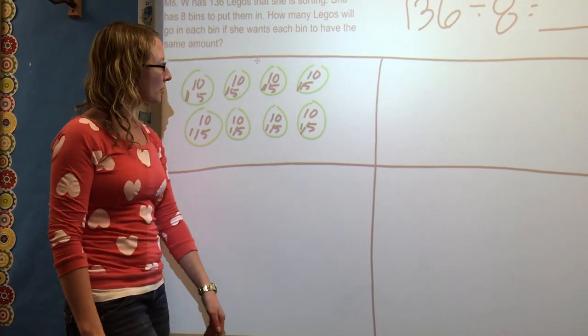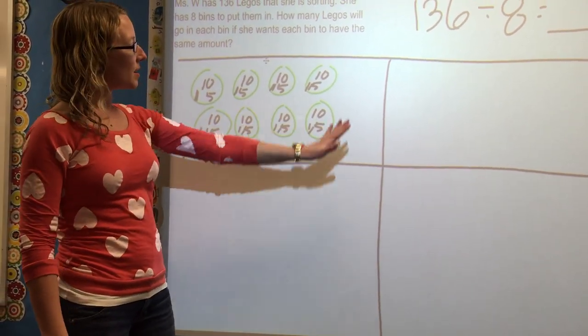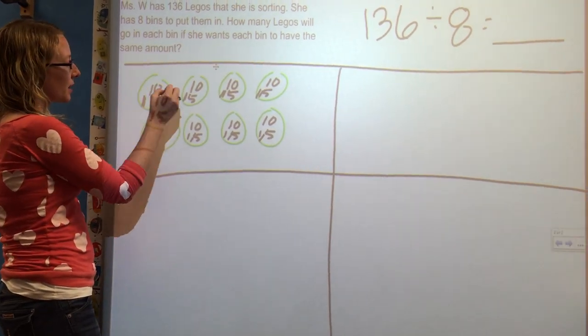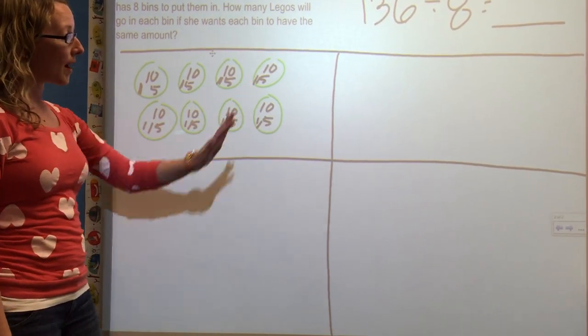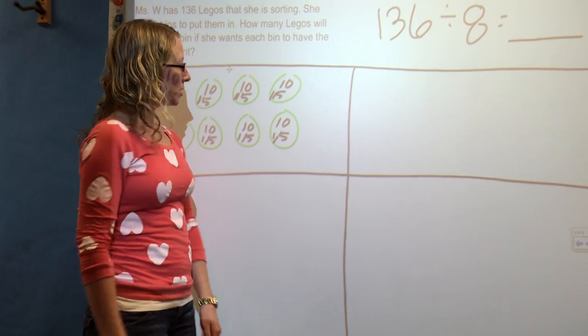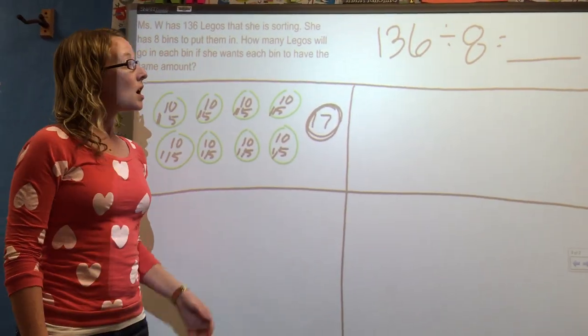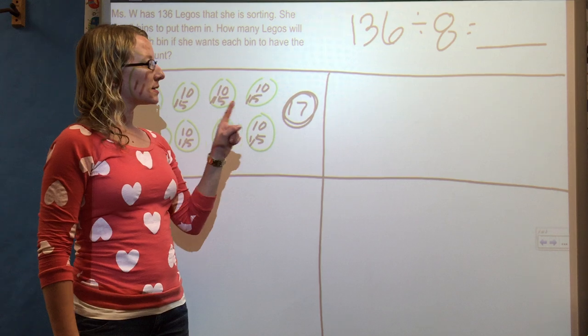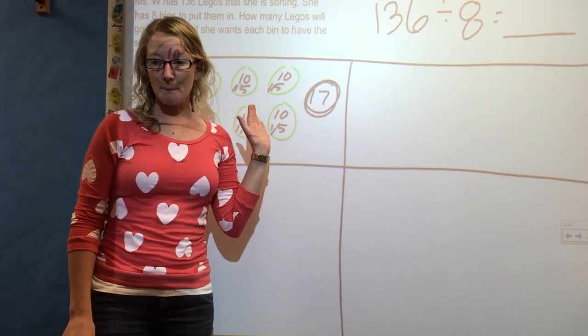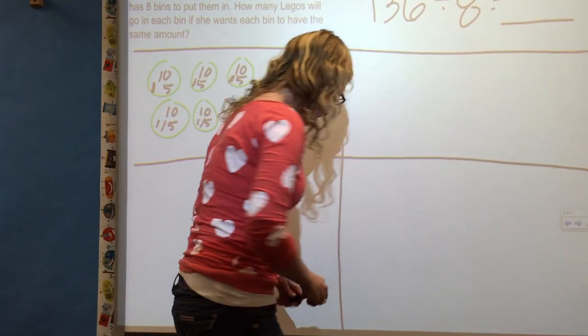I got all of my Legos put away. Do they all have the same amount in each bin? Yes. These kind of look like my line went on top of them, but they do all have how many Legos in each? 17. 17 in each bin. Okay, so that's my answer. 136 divided by 8 is 17. This is a basic strategy we call modeling.